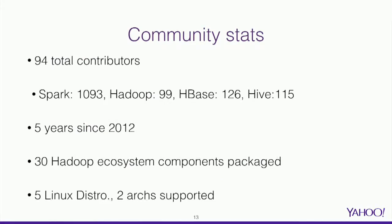Here are some community stats. We currently have 94 total contributors. For reference, Spark has more than a thousand, which is the outlier, and the rest are all around 100. We've been in the big data area for five years since 2012, and we currently have 30 Hadoop ecosystem components packaged, supported on five Linux distributions with two architectures — X86 and IBM PowerPC PPC64LE.